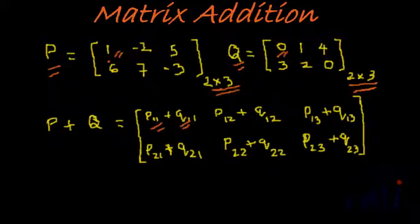So here P11 is 1 and Q11 is 0, hence this element will become 1. P12 is minus 2 and Q12 is 1, so minus 2 plus 1 will give minus 1.